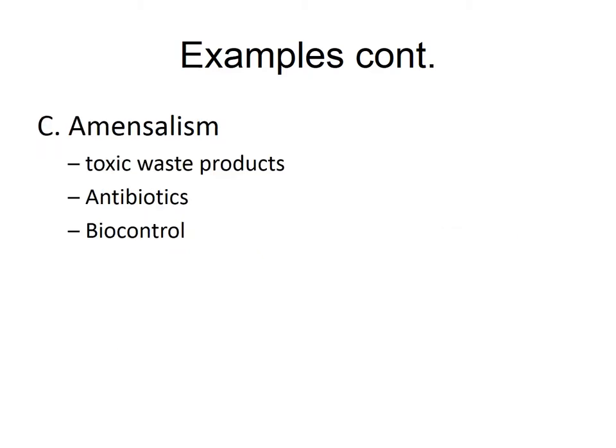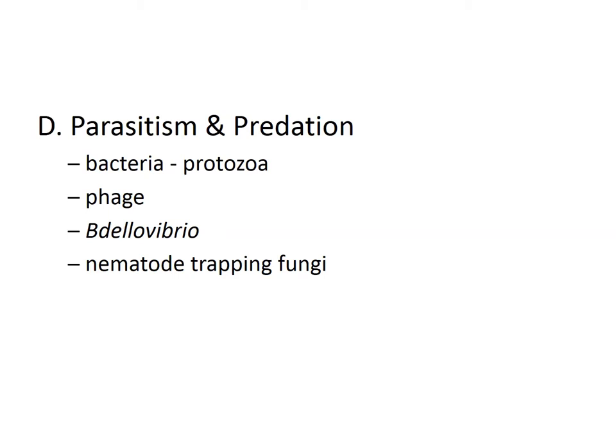Amensalism is the opposite of commensalism — one organism is neutral while the other is negatively affected by the first organism's presence. Examples include the production of toxic waste products, antibiotics, and biocontrol agents. Organisms with biocontrol capabilities can negatively affect other organisms in the environment.